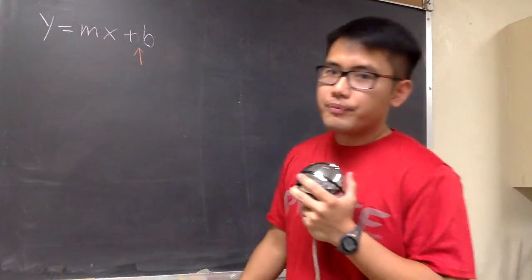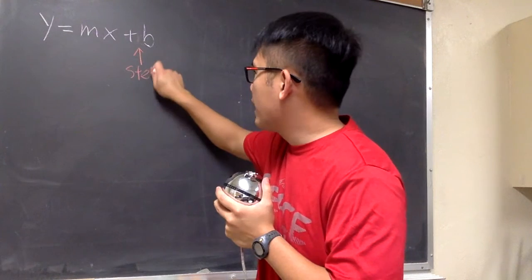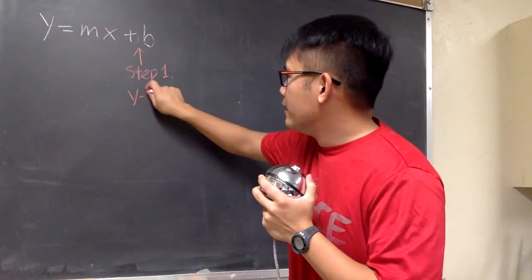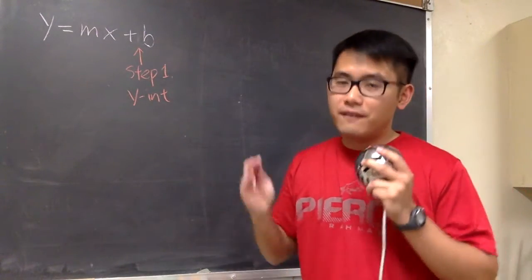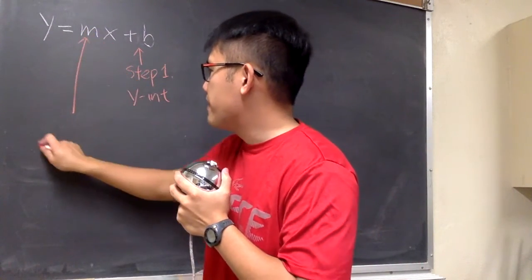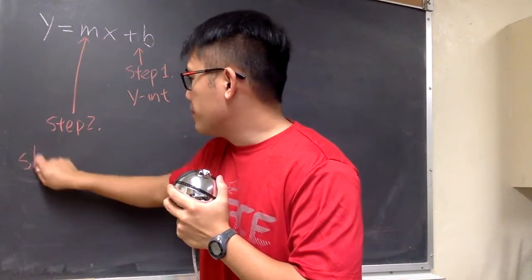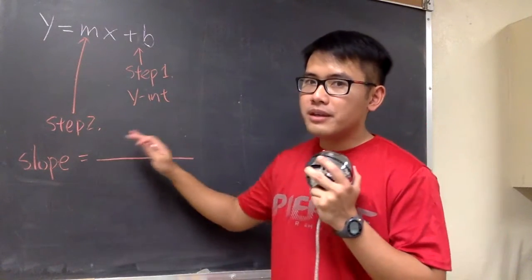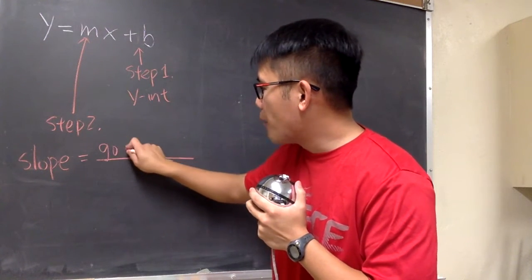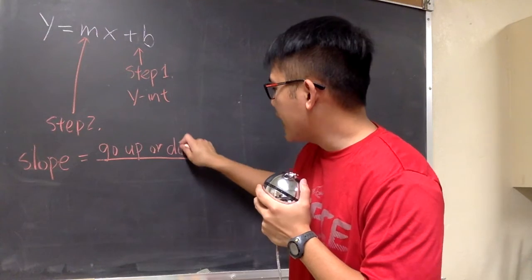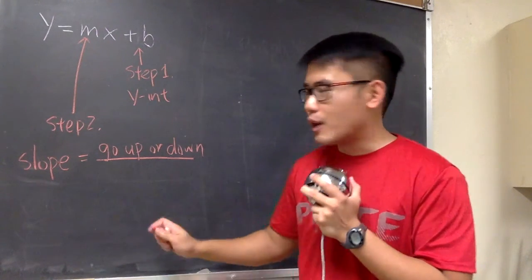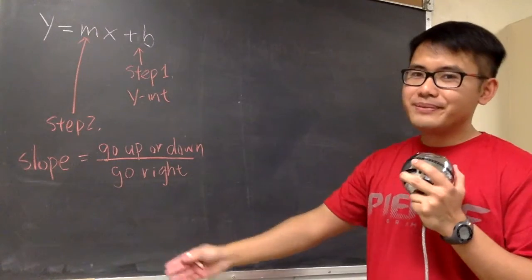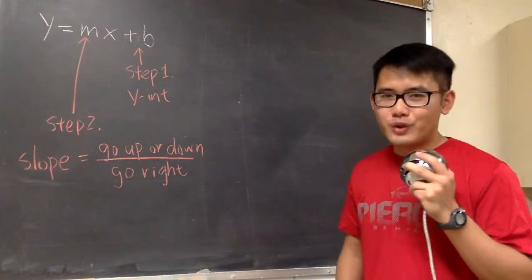First, we look at the b value — we begin with the b value. This is step 1, and it's going to tell us the y-intercept, which means we go on the y-axis first. Then we look at the slope, which is m — this is step 2. For the slope, we should look at it as a fraction: the numerator tells us how many times to go up or down, and the denominator tells us how many times to go right. That's it — two steps, you don't need to make a table. This is the one-two punch to graph an equation of a line.